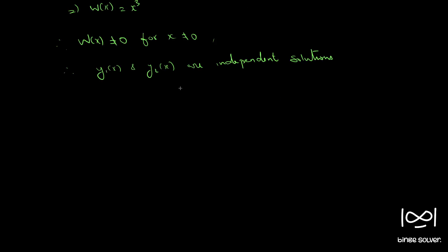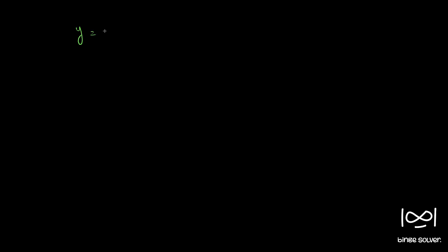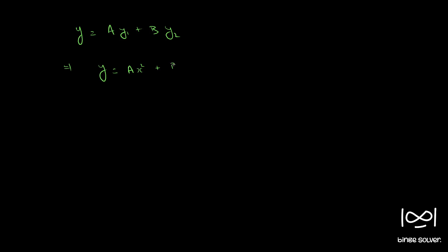Since y1(x) and y2(x) are independent solutions, we need to find the differential equation from the given solutions. Since they are linearly independent, we can write y = a·y1 + b·y2, that is y = a·x² + b·x²·log(x). Let this be equation 1.